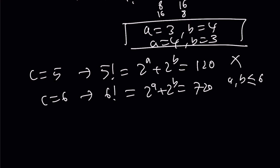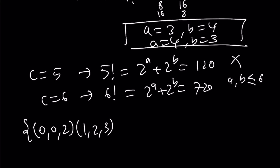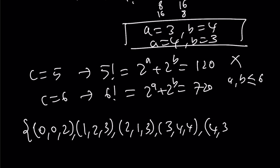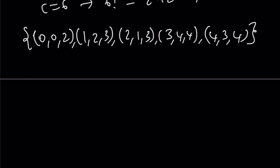That gives us all the solutions. We have (0, 0, 2), (1, 2, 3), (2, 1, 3), (3, 4, 4), and (4, 3, 4). Remember, the third number is always c. So we end up with 5 solutions in total.